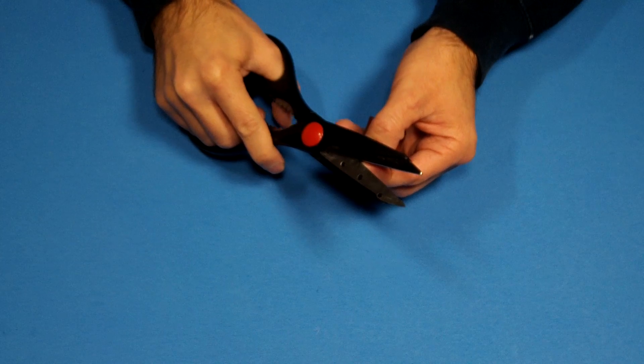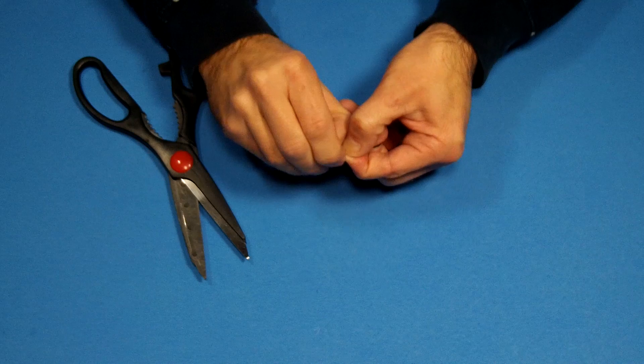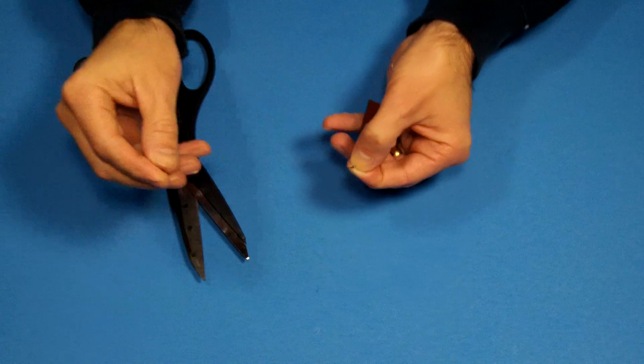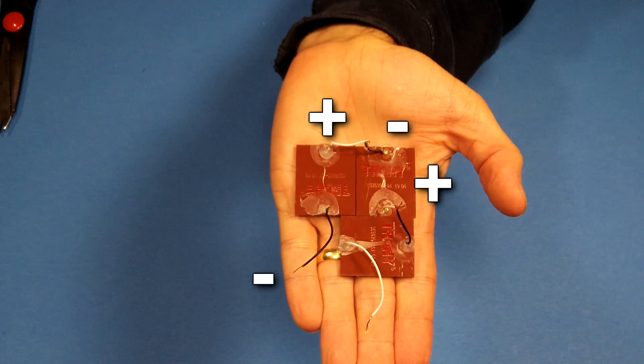Next, strip the insulation off the end of your wire. Now attach your wires in a series circuit pattern.